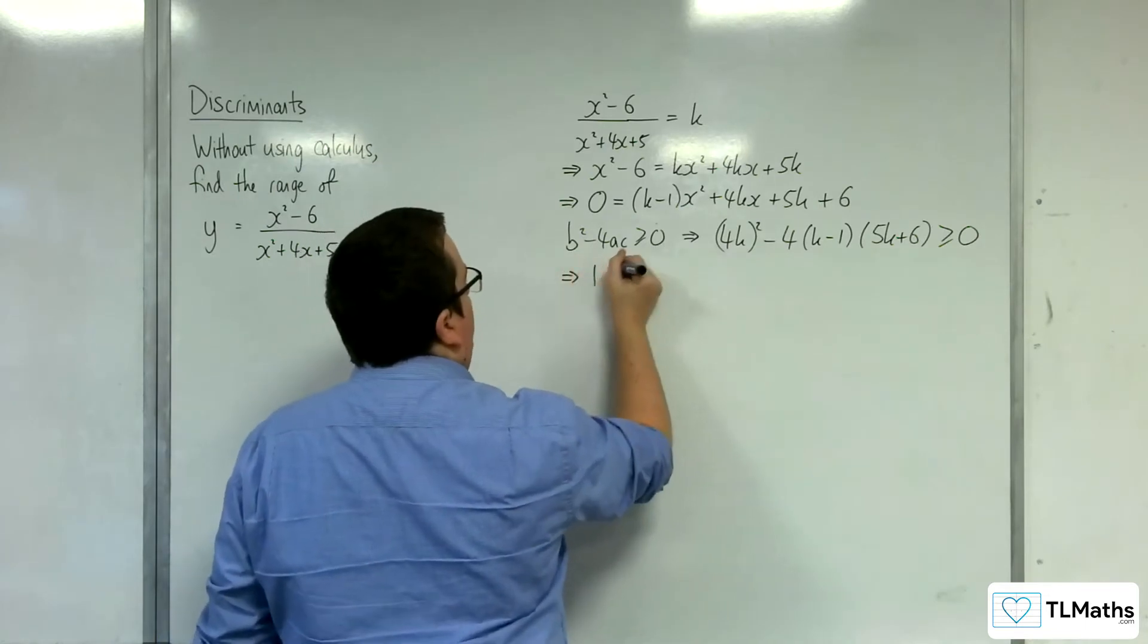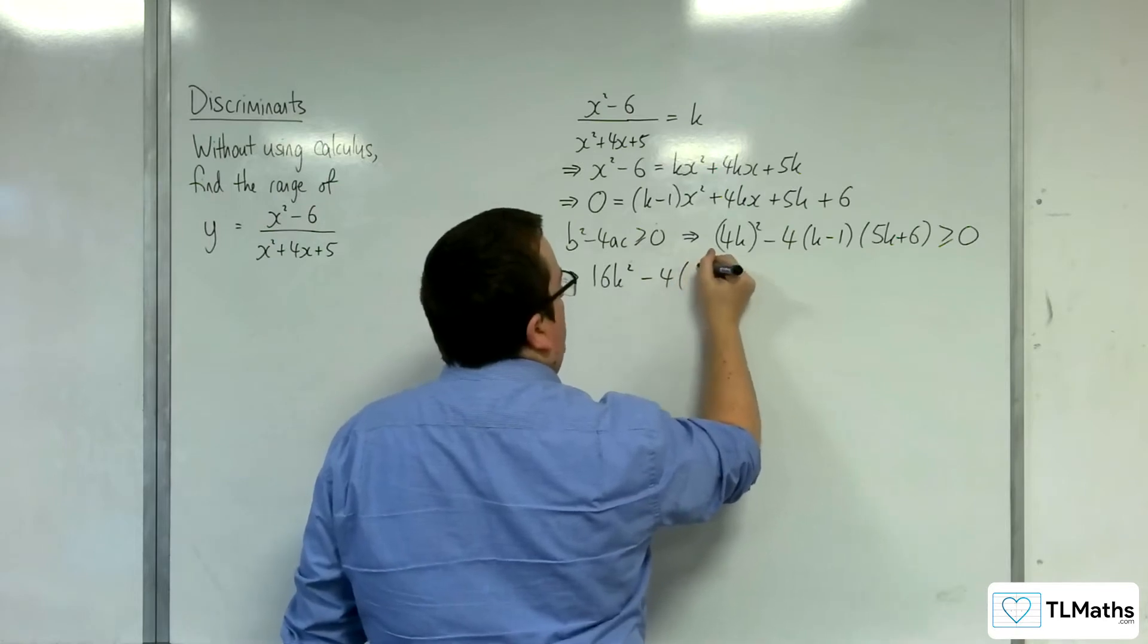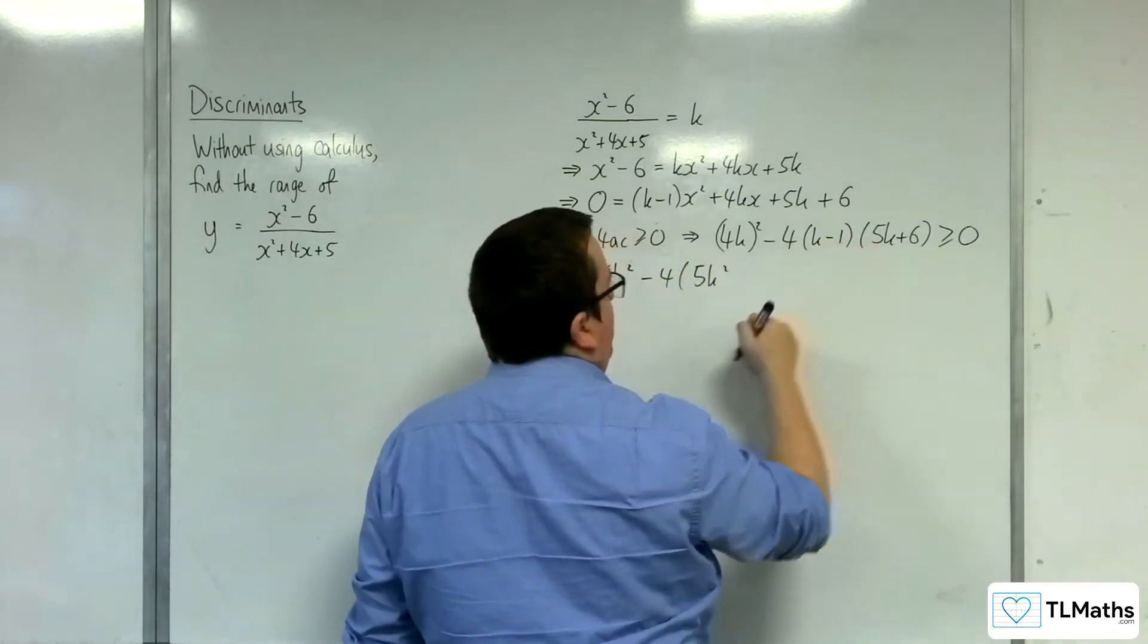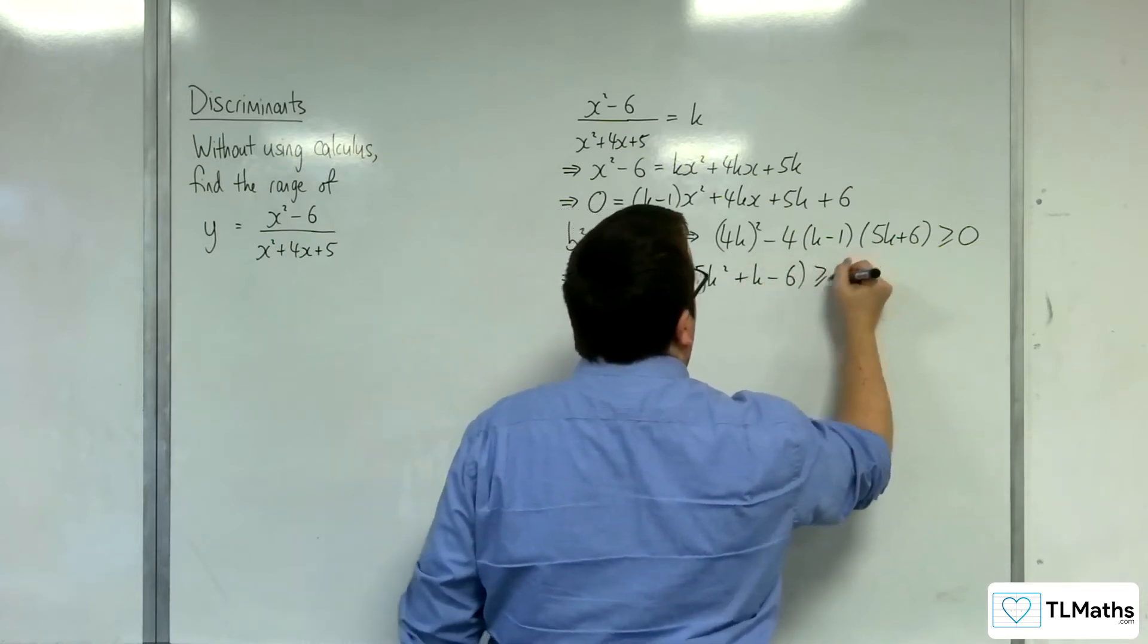So expand that out. 16k squared take away 4 lots of, we're going to have 5k squared plus 6k take away 5k, so plus k take away 6 is greater than or equal to 0.